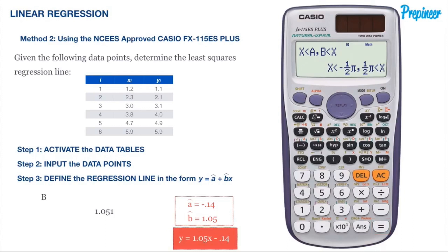Adding all this together, we get a regression line equal to 1.05x minus 0.14, which confirms the equation we previously calculated by hand. In the same regression menu, we can get the goodness of fit, which is r, by selecting the option in the same way we did for a and b. The value is 0.99, telling us the line fit is good and nearly a perfect straight line, which we already knew.